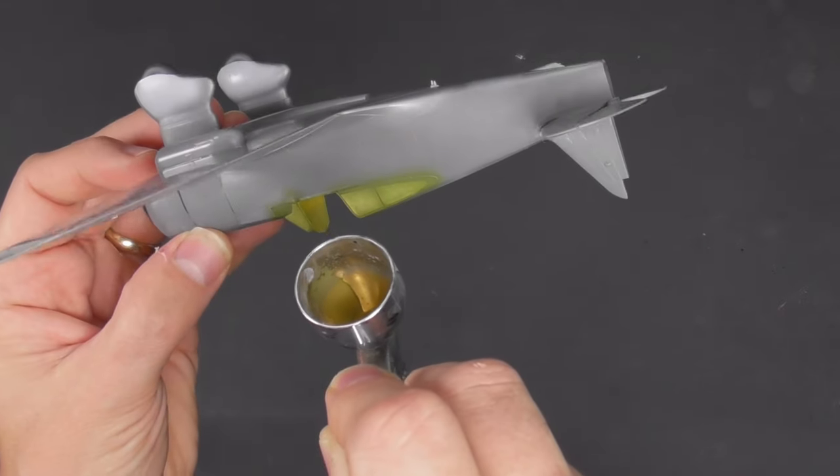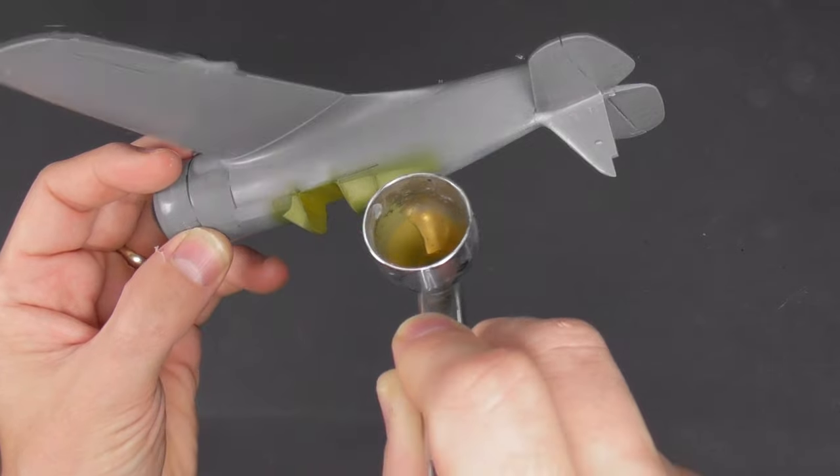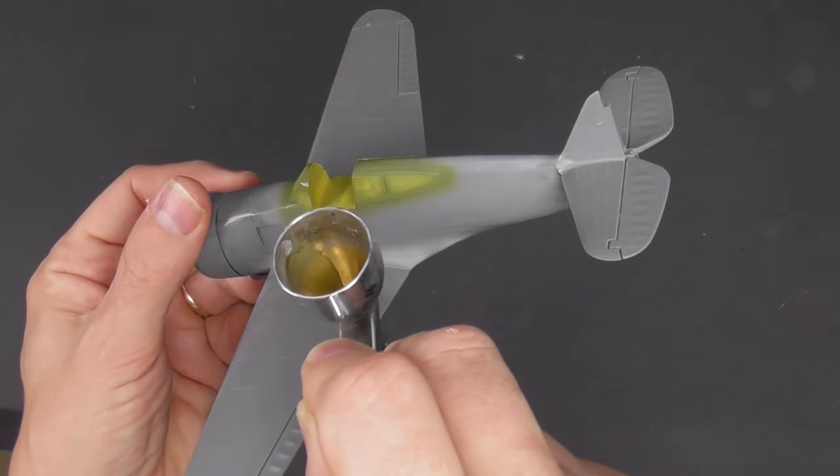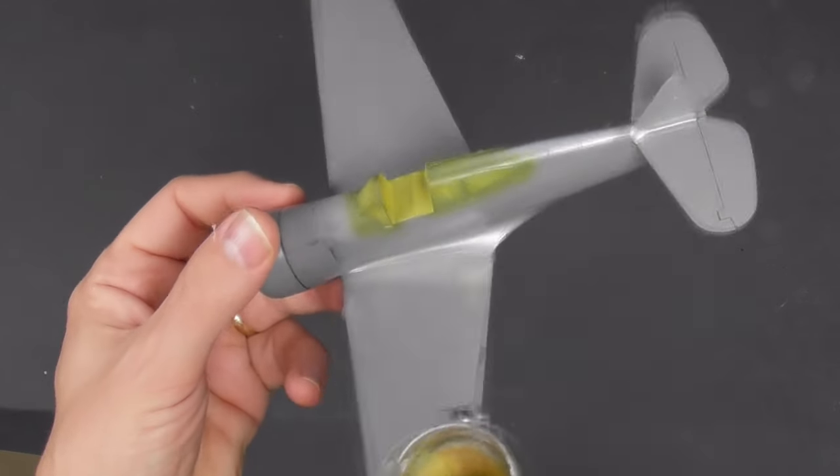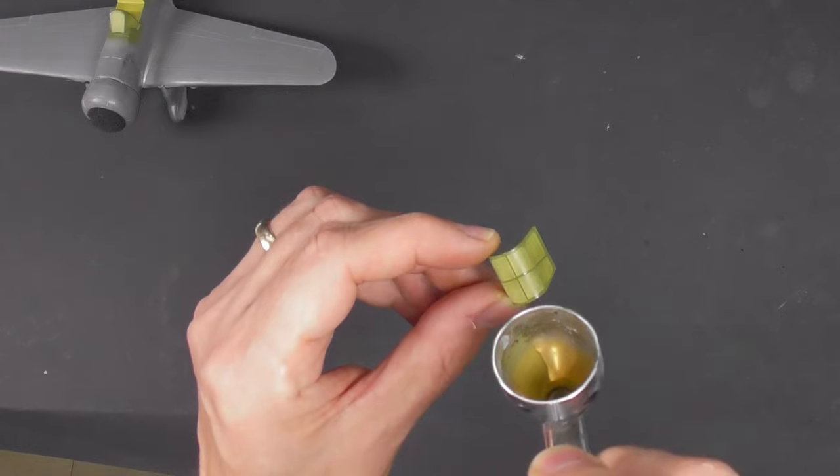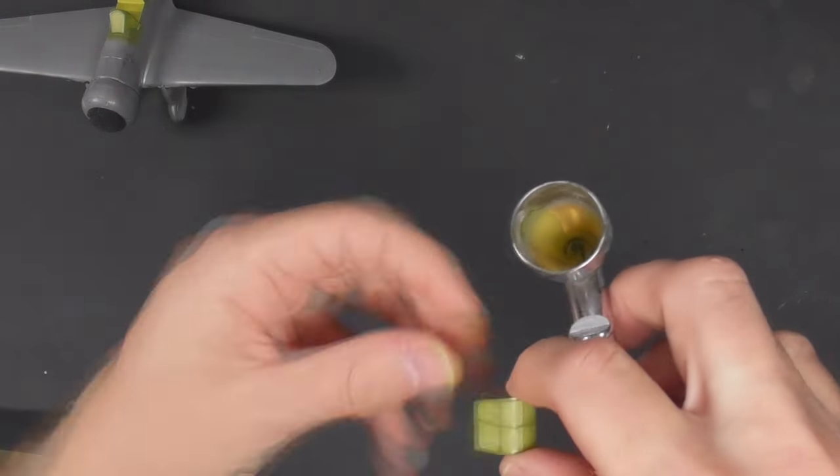Hello and welcome back to Scale Modeling Cafe and the final part, which is the painting and weathering of the Clear Prop H-75N Hawk. As you can see, I'm painting the interior green over the clear parts first and the inside of the sliding part of the canopy. I should have done the windscreen as well but I didn't—bit of a faux pas.